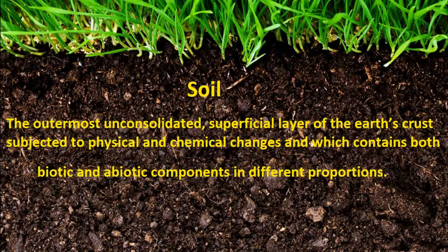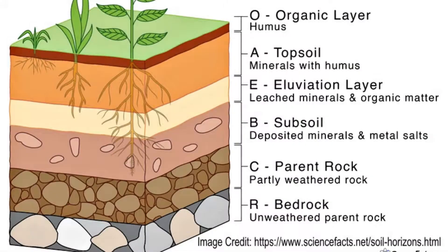Soil is the outermost unconsolidated superficial layer of the earth's crust subjected to physical and chemical changes, which contains both biotic and abiotic components in different proportions. It is usually differentiated into horizons of minerals and organic constituents of variable depths. In brief, soil can be defined as that region on the earth's surface where geology and biology meet.